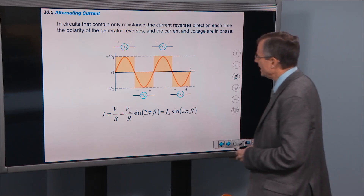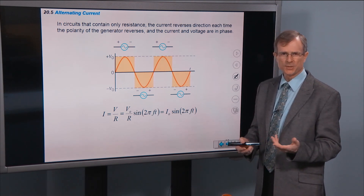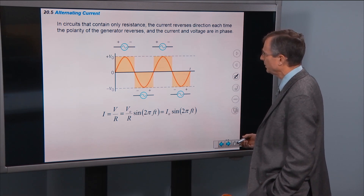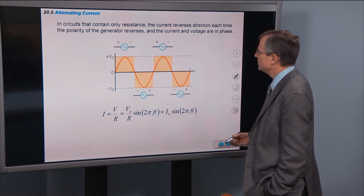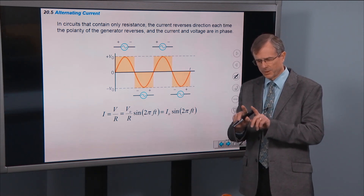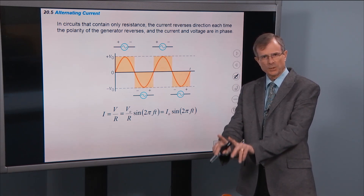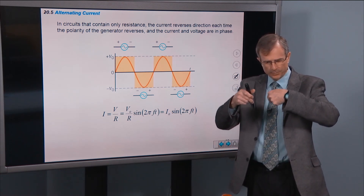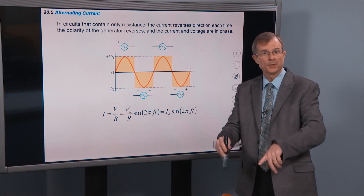In circuits that contain only resistance — no transistors, capacitors, or anything like that — the current reverses direction each time the polarity of the generator reverses, and the current and voltage are in phase with each other. When the current is high the voltage is high, and when the current is low the voltage is low — they oscillate in phase.